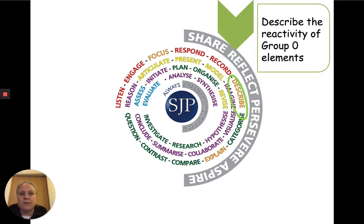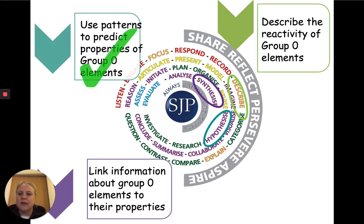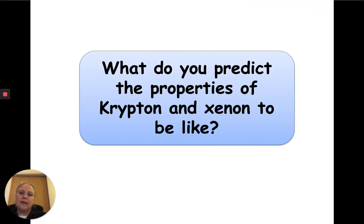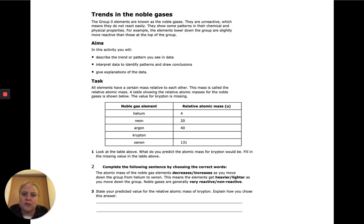So describe the reactivity of the group zero elements and use patterns to predict them. What do you predict the properties of krypton and xenon to be like, now that we've looked at the other elements? There's a worksheet attached — have a little go at this worksheet please.